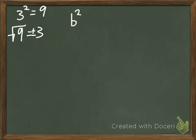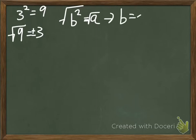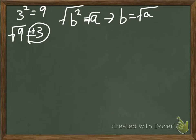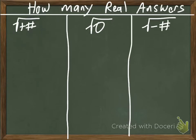In general, if b squared equals a, then taking the square root gives us b equals the square root of a. You'll notice I wrote plus or minus 3, and we're going to talk about that in the next slide.